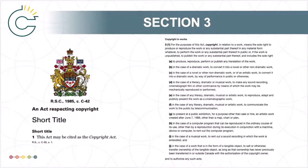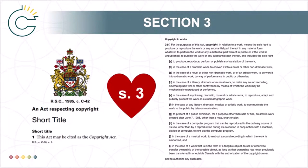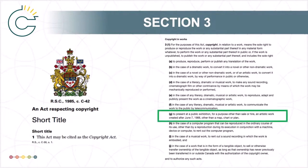The rights under copyright are detailed in Section 3 of the Copyright Act. From a rights holder's perspective, Section 3 is the heart of the Act, even if some of the rights seem rather awkwardly phrased, possibly narrow, and maybe even not important at all. For example, one of the rights under copyright is the sole right to present at a public exhibition, for a purpose other than sale or hire, an artist's work created after June 7, 1988, other than a map, chart, or plan.